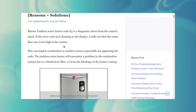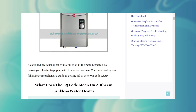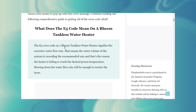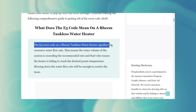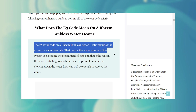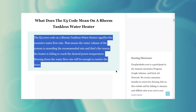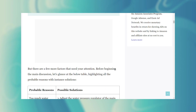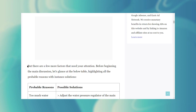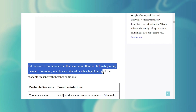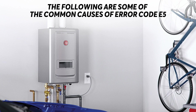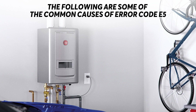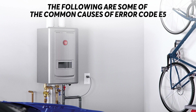Error Code E5 in the Rheem Tankless Water Heater simply means that there's a problem with the heat exchanger, which makes the water flow rate too high in the system. It could also indicate that there is a blockage or a faulty sensor. The following are some of the common causes of Error Code E5.